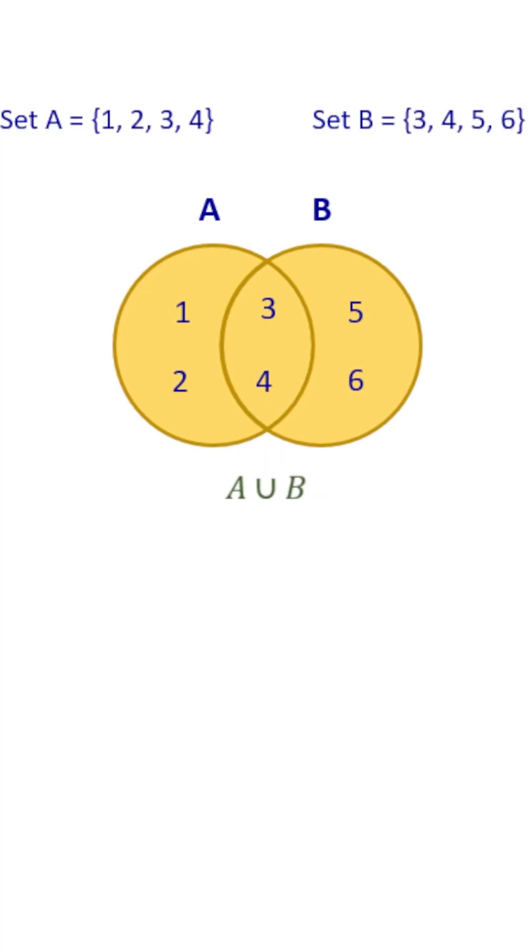The union of A and B includes 1, 2, 3, 4, 5, 6. Notice that 3 and 4 appear only once, even though they're in both sets.